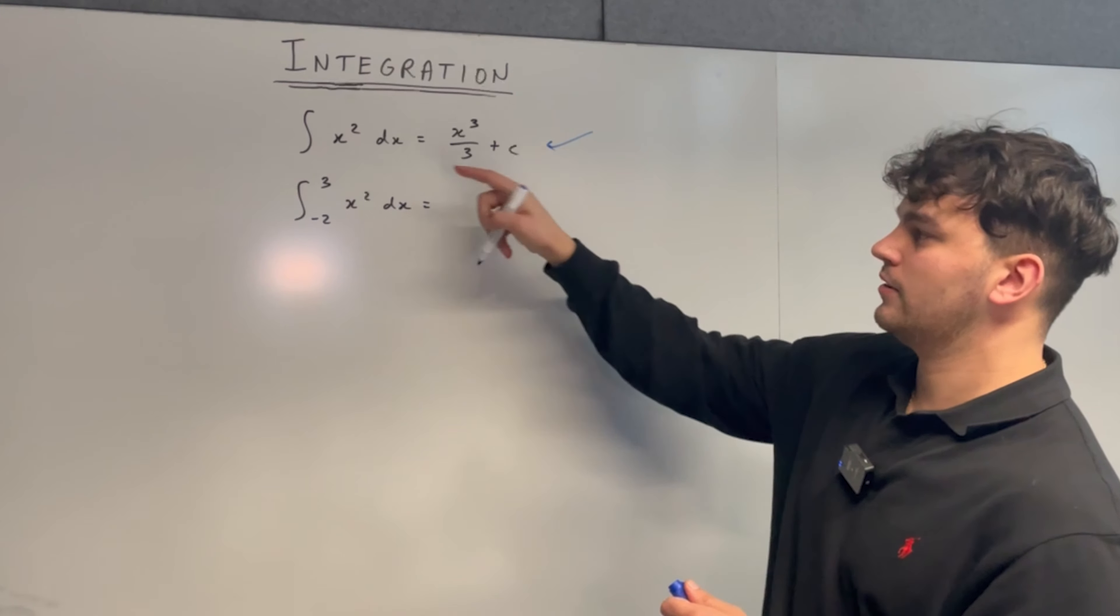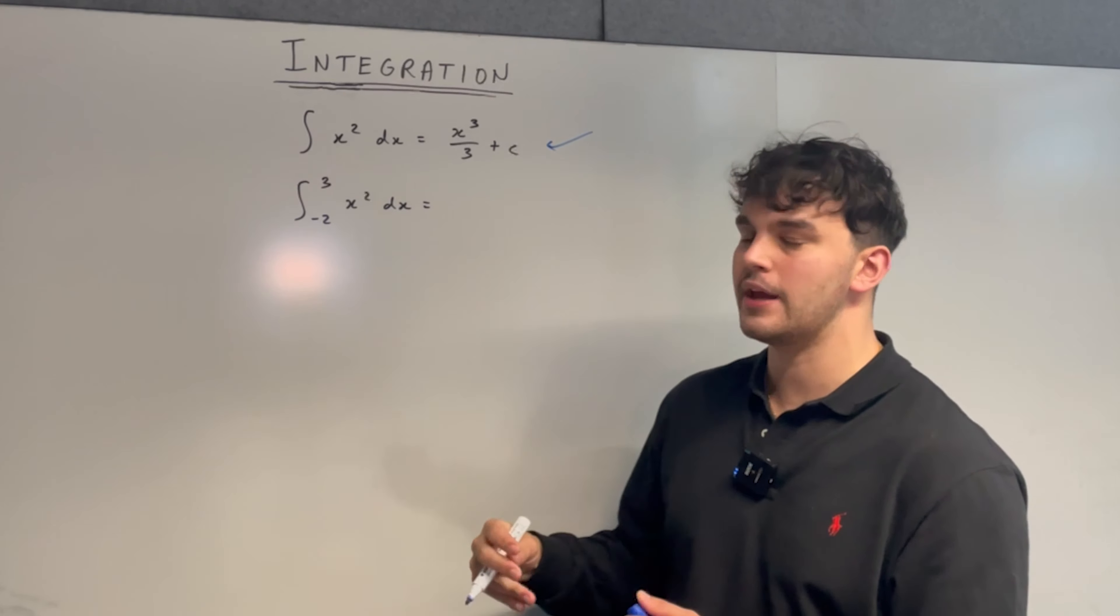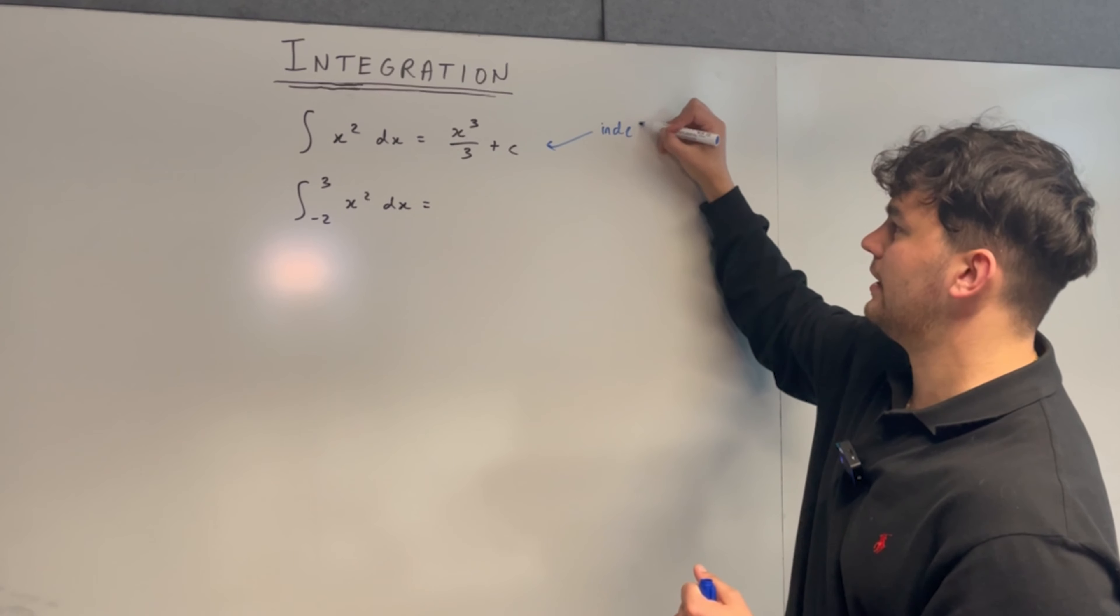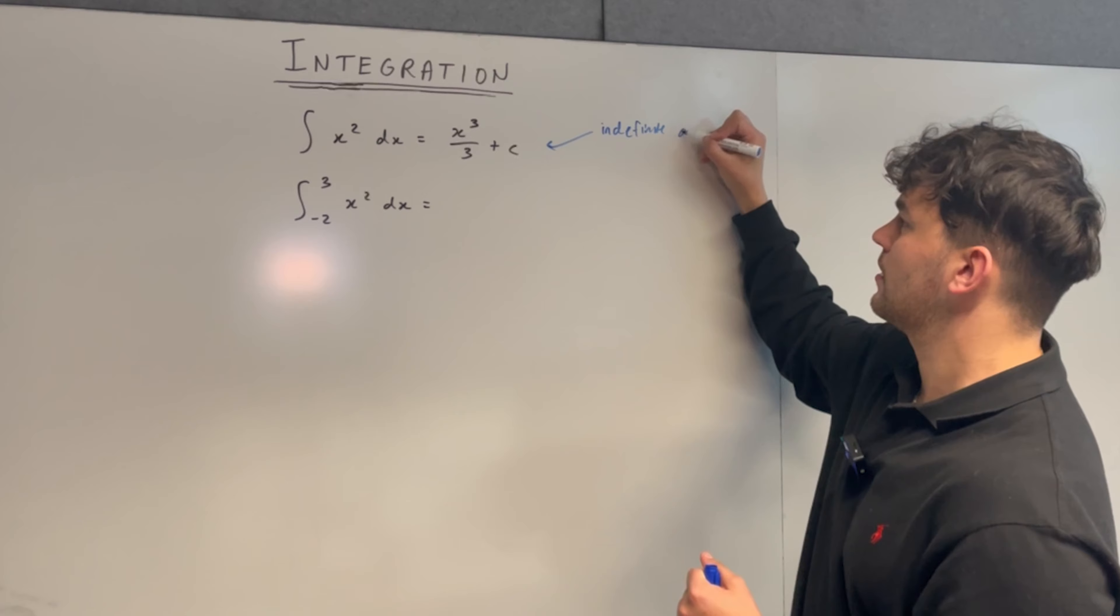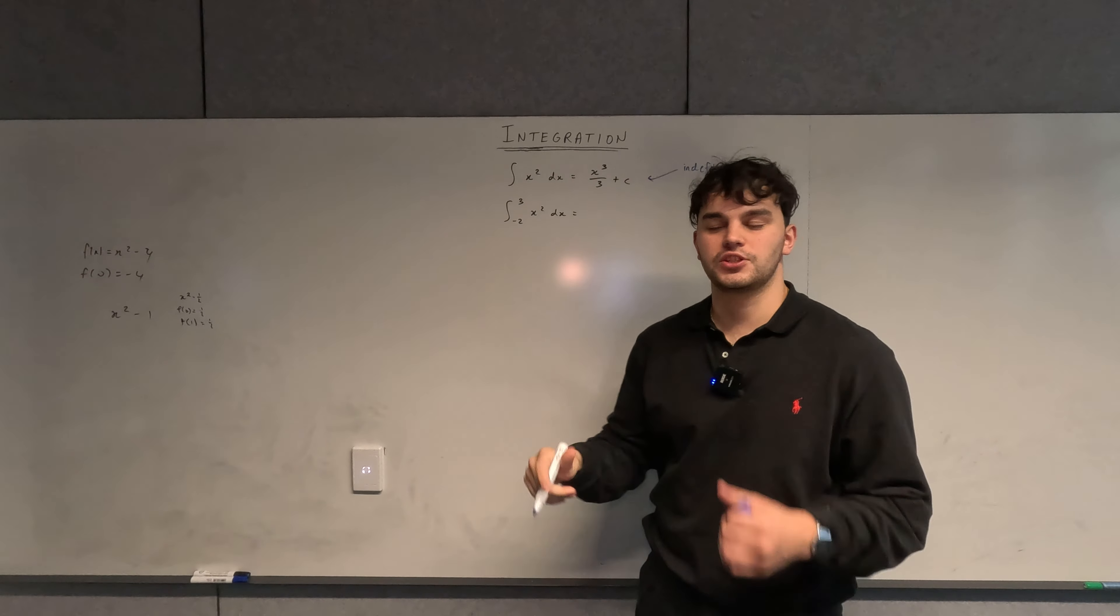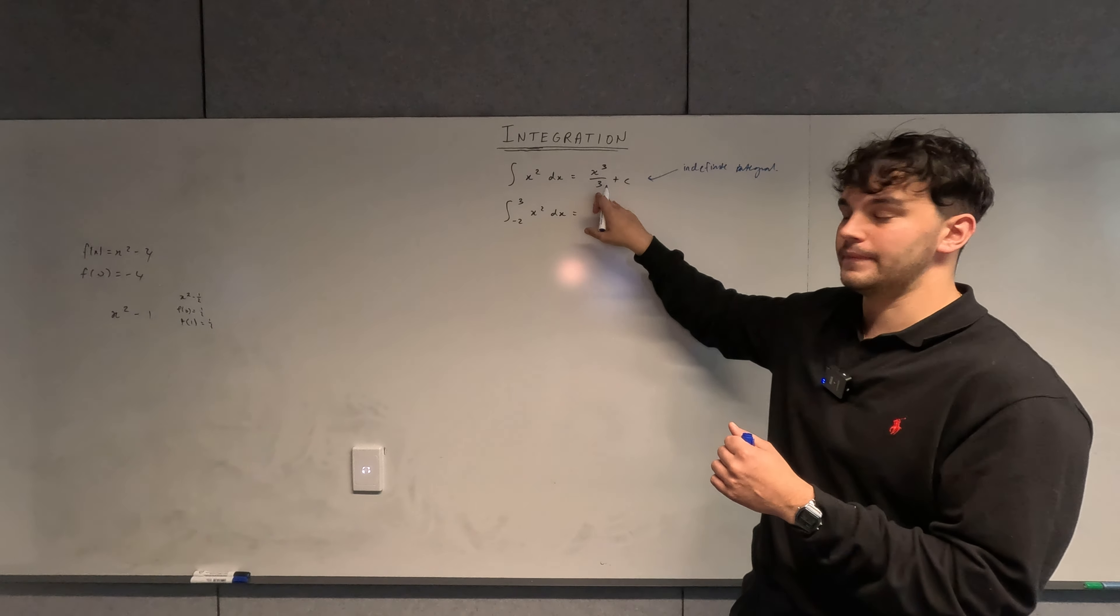This is what we know so far. The integral of x squared with respect to x becomes x cubed over 3, and that's due to the power rule. Now this is what we call an indefinite integral. That's the terminology that we use for when we integrate a function and get another function back.